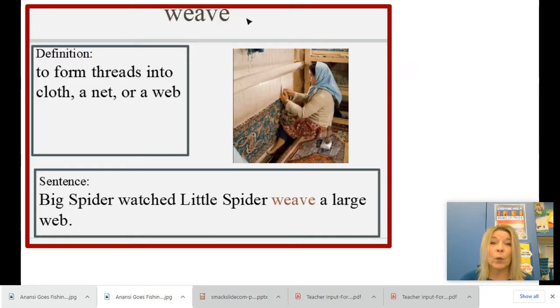The first one is weave. Can you say that one? Great. Weave is a verb. It's something that you do and it means to form threads into cloth or a net or a web. So when you weave threads, could be yarn, it could be string, could be just thread, and you're weaving it into something like she's weaving these threads in this picture into this beautiful rug.